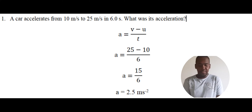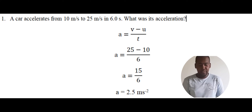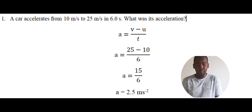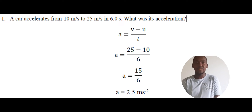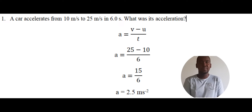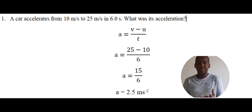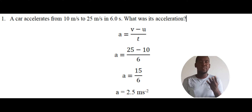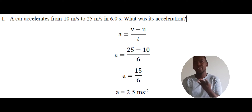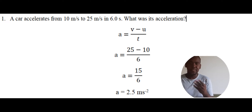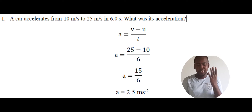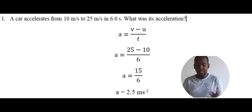Question one: a car accelerates from 10 meters per second to 25 meters per second in 6 seconds. What's the acceleration? We're given the final velocity, the initial velocity, and time, and we're asked to find acceleration, which is a.